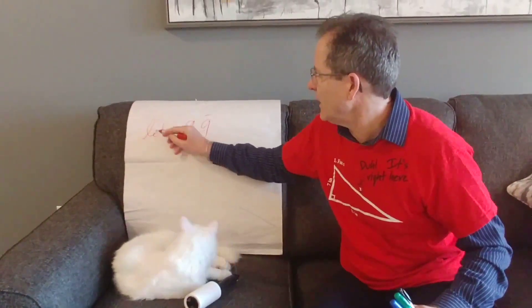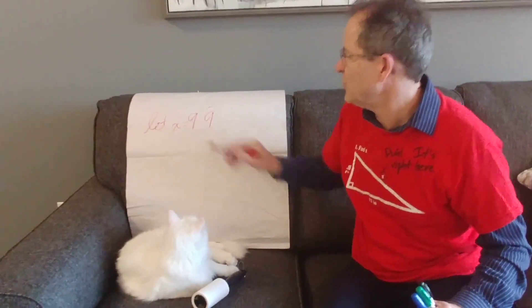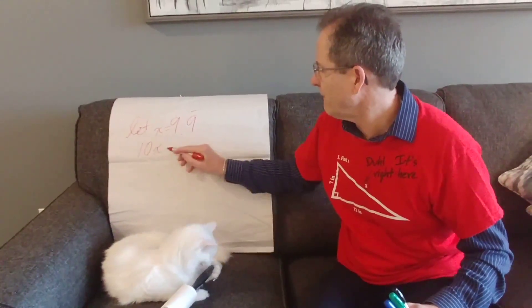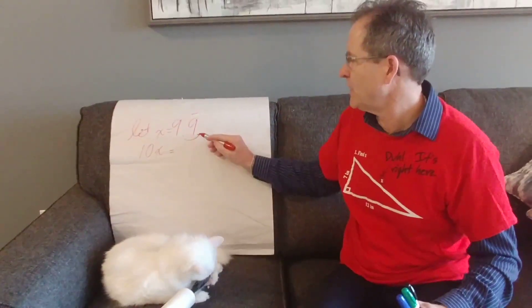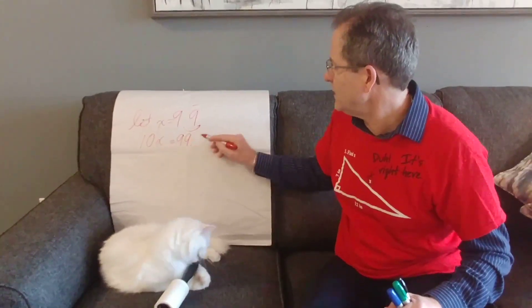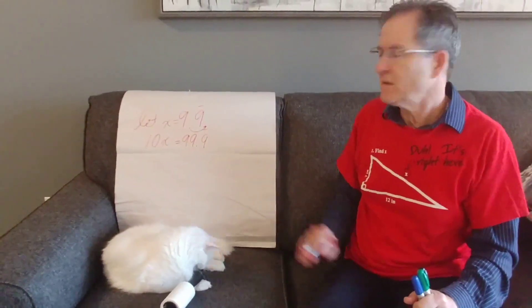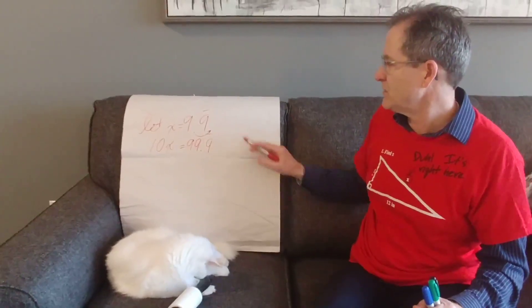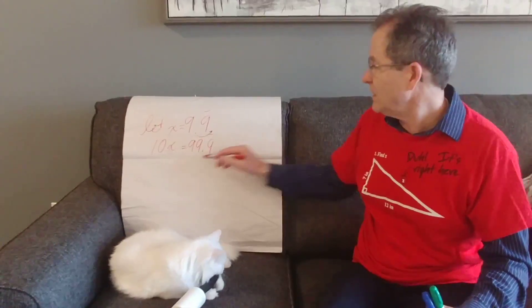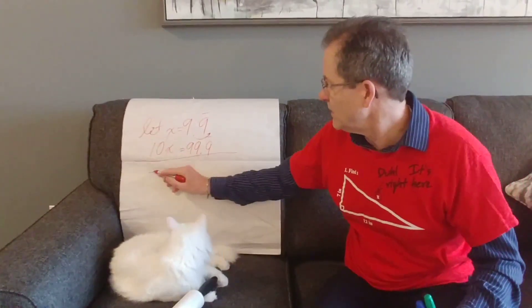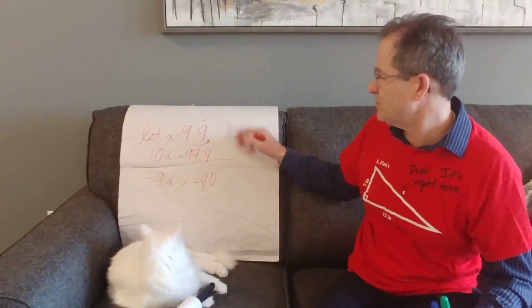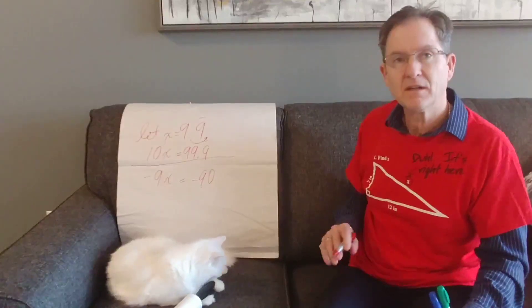Let's say we call x = 9.9 repeated. Then 10 times x — well, you just move the decimal over one place when you multiply by 10 — so that'll be 99.9 repeated. In both cases the 9s go forever; there's not one less 9 here, there are an infinite number of 9s. If we subtract, we get 10x − x = 99.9... − 9.9..., and the .9s which go forever cancel out, giving us 9x = 90.